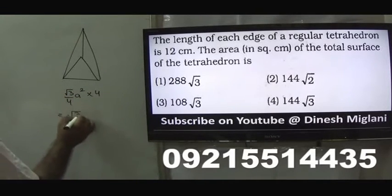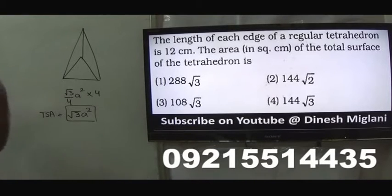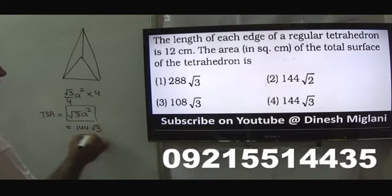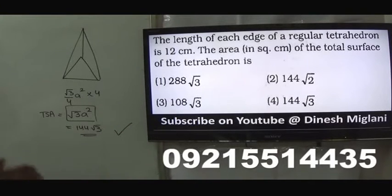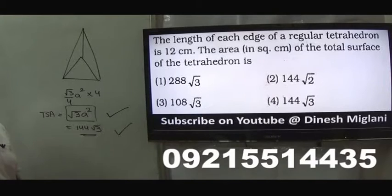The formula we use for finding the total surface area of a tetrahedron is root 3 times a squared, because a tetrahedron includes four equilateral triangles. Here a is given as 10, so my answer is 100 root 3. I hope the idea is clear. If you have to find the total surface area of a tetrahedron, the formula should be root 3 times a squared.